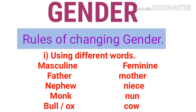The first rule is that when we convert a gender from masculine to feminine, we completely change the word. For example, the word 'father' is masculine — in feminine we use 'mother'. We have completely changed the word. Another example: nephew becomes niece, king becomes queen. So the first rule is that we completely change the words.